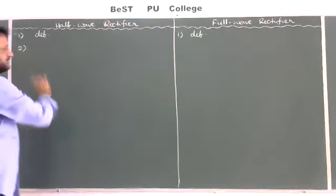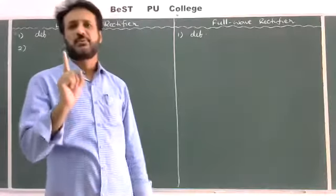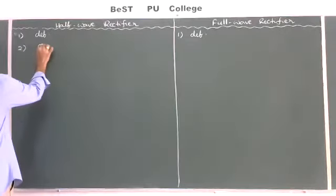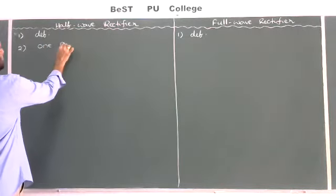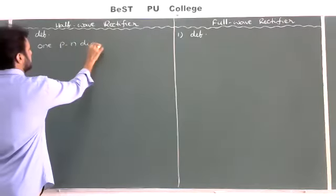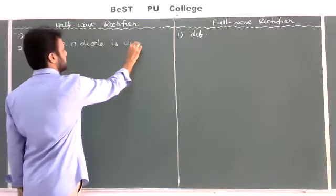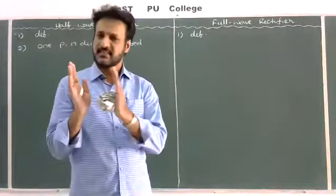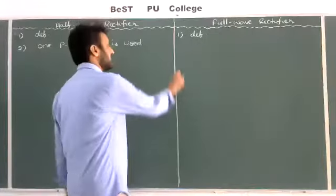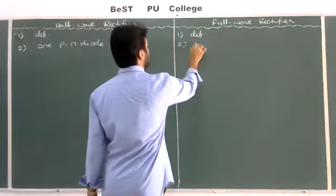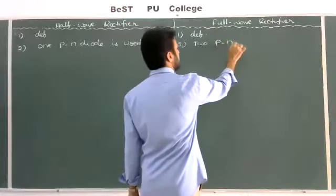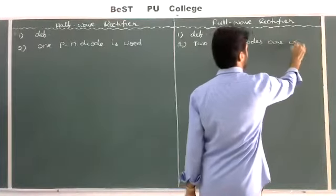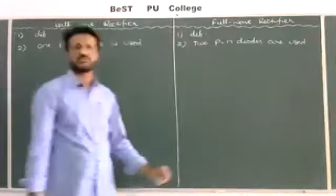Second point — number of diodes. In the case of the half wave rectifier, only one PN junction diode is used. That's why only half of the AC cycle is converted into DC. In the case of the full wave rectifier, two PN junction diodes are used.